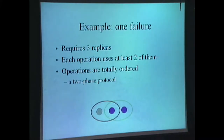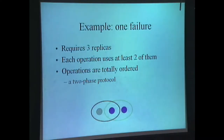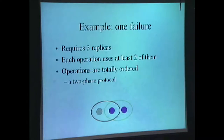With 2f+1 replicas, you can carry out a two-phase protocol. This green circle represents the operation that executes right now, carried out at two blue replicas. Then at some time in the future, another operation is carried out, which isn't able to communicate with one replica but is carried out at two different replicas.